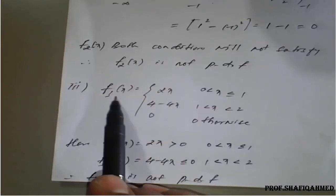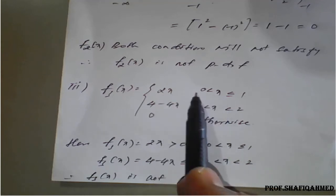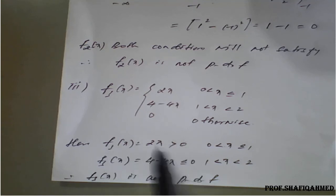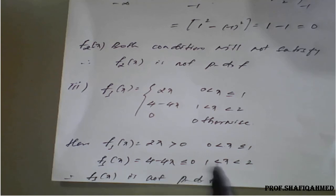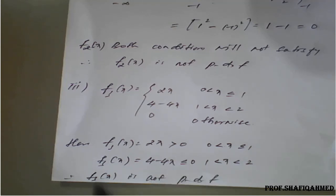In the third example, f3(x) is given as 2x for 0 < x < 1, and 4 − 4x for 1 < x < 2. The first condition is satisfied — the given function is positive. But for the second condition, when you replace x = 1 and x = 2, the first part is positive but the second part turns negative. Since any one case fails, we can say that it is not a PDF.